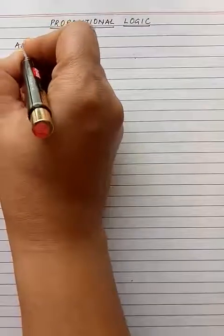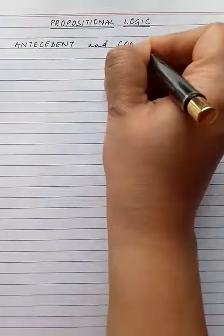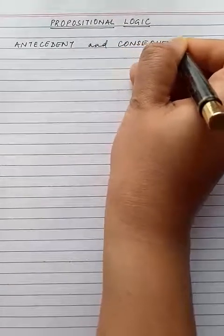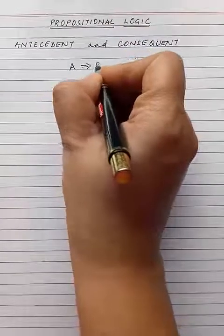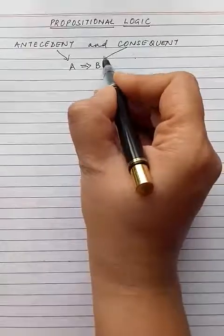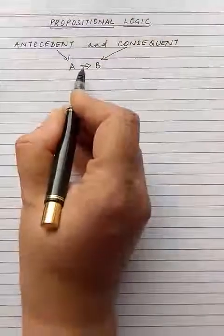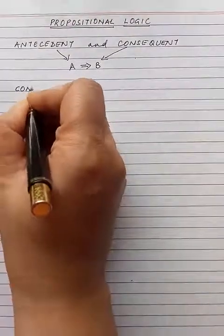Hello students, in this video we will be continuing with the chapter of propositional logic. A few terms I want to discuss here are antecedent and consequent. If a conditional proposition is such that A implies B, then the proposition A will be called the antecedent and the proposition B will be called the consequent. Before the arrow comes the antecedent, and after the arrow comes the consequent.